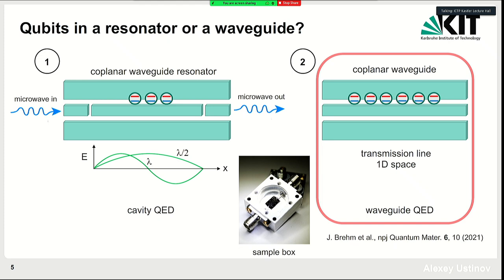We have done a number of experiments with arrays of superconducting qubits placed in a cavity, demonstrating Tavis-Cummings Hamiltonian behavior, collective coupling, and coupling to a single collective excitation mode. Today I'll speak about arrays placed in a one-dimensional transmission line or waveguide. You can see a picture of our sample holder — the whole device is quite small, about five to eight or five to ten millimeters, placed in a microwave sample holder where we measure transmission or reflection at microwave frequencies.